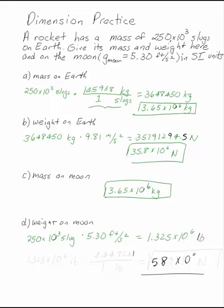Now, that's not in newtons. We can multiply 1.325 times 10 to the sixth pounds by 4.4482 newtons, which is in one pound, and get 5.89 times 10 to the sixth newtons.